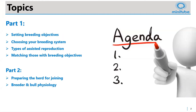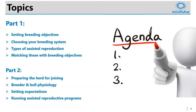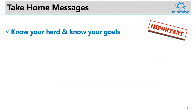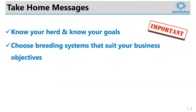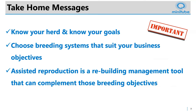Next week we'll carry on and have a look at preparation for the breeders before joining, breeder and bull physiology, setting expectations for your breeding season, running assisted reproductive programs, and measuring the success of those programs. What we hope you take out of today's session: how to get to know your herd and know your goals, how to choose and set your breeding systems to fit your business objectives, and how assisted reproduction can be used as a rebuilding management tool.